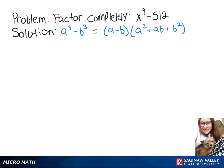We're going to factor x to the 9th minus 512. And we're going to start by using our difference of cubes formula. So we can rewrite x to the 9th minus 512 as x cubed cubed minus 8 cubed.